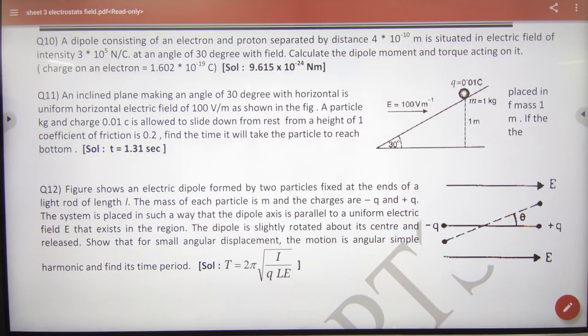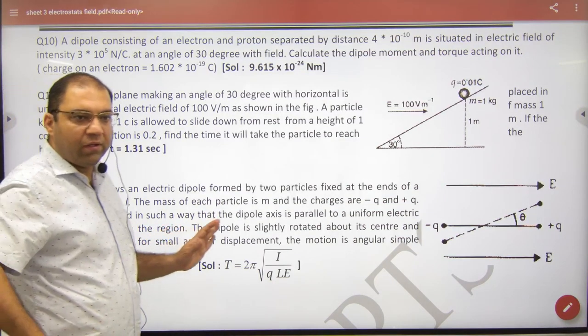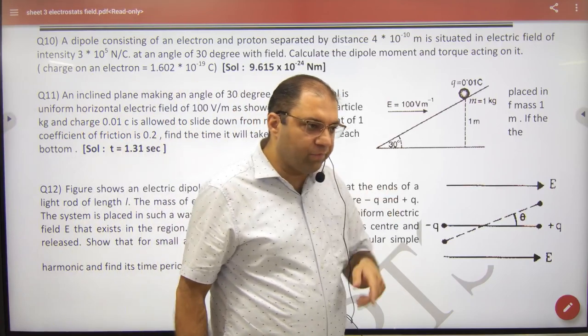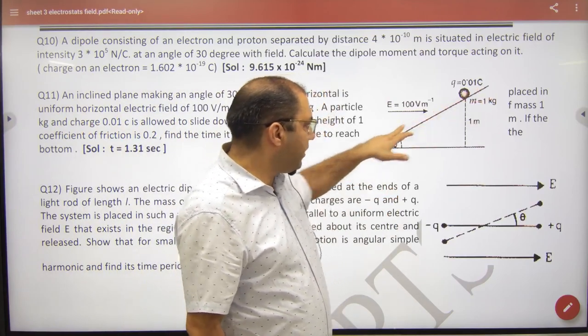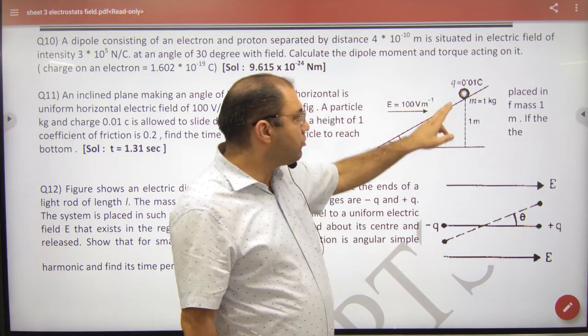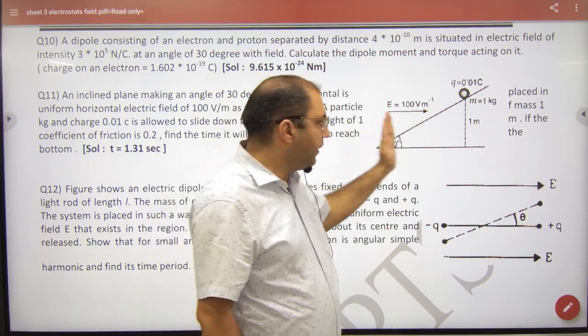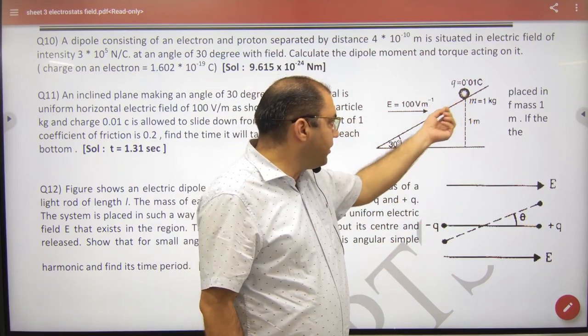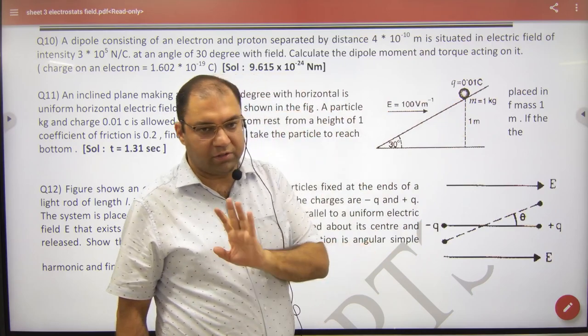Look, in this question, the 11th question, there is an inclined plane. This question was pending. In this question, the inclined plane has a charged particle in an electric field. This charged particle will come down.